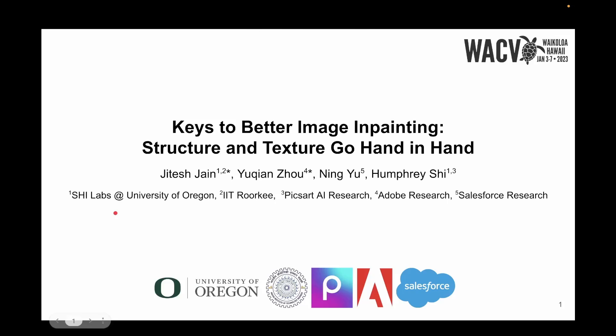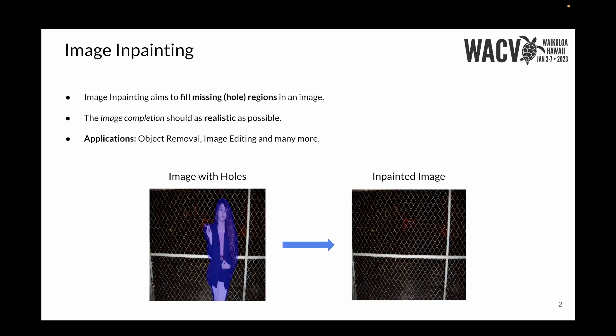Hi, I'm Jitesh Jain and I'll be presenting a work: Keys to Better Image Inpainting — Structure and Texture go hand in hand. Image inpainting aims to fill missing hole regions in an image in a way that is as realistic as possible. It has many applications in the industry, with use cases like object removal and image editing, making this an important problem.